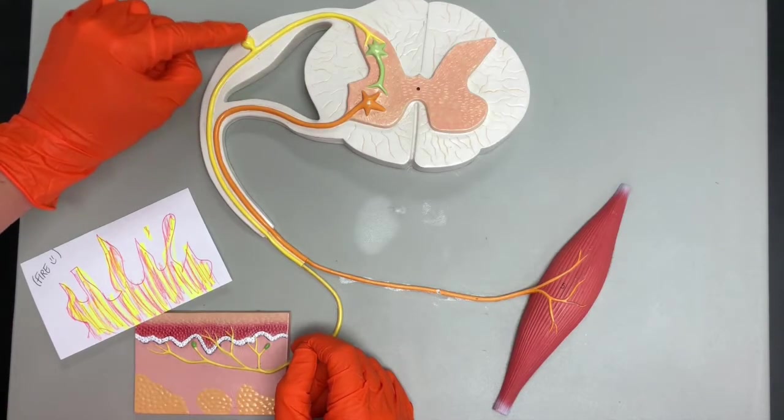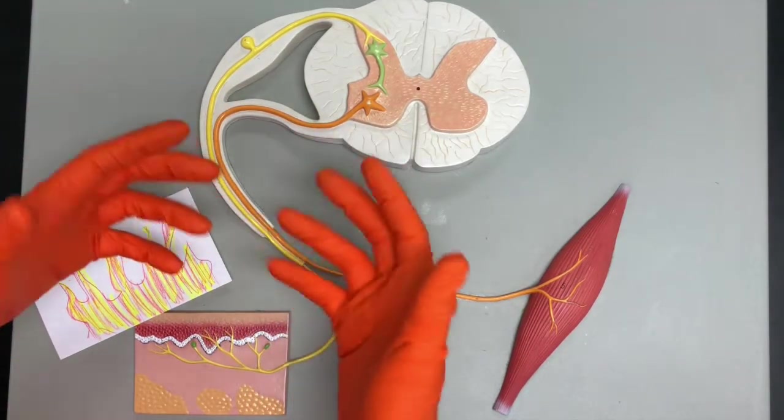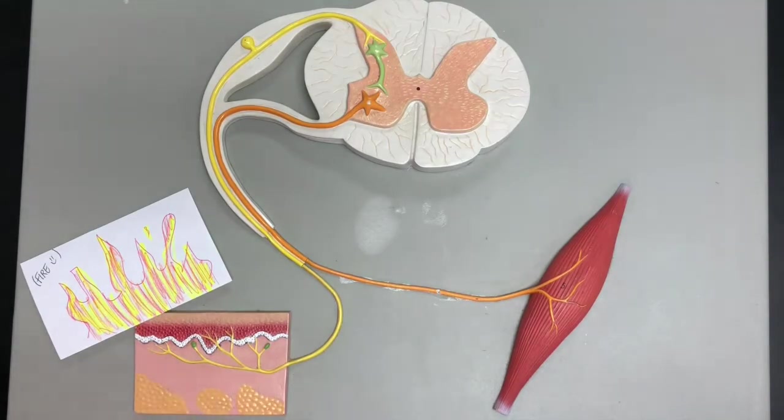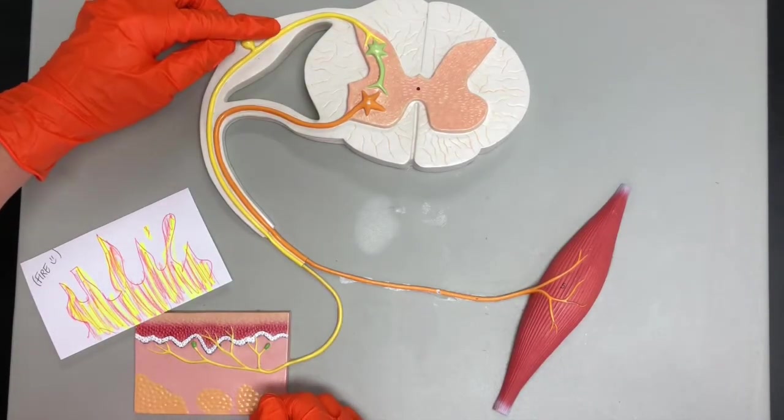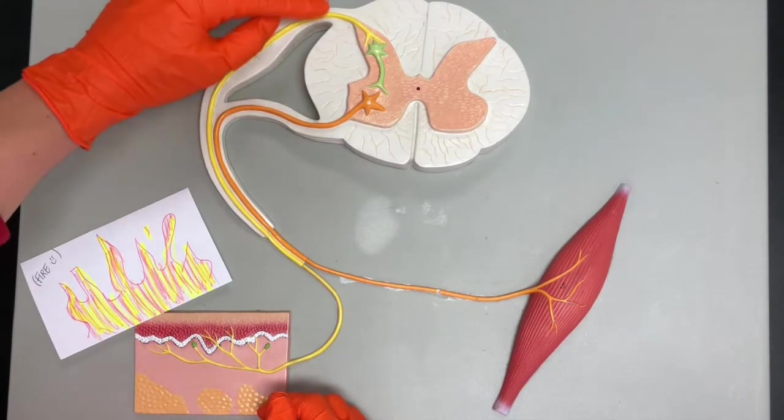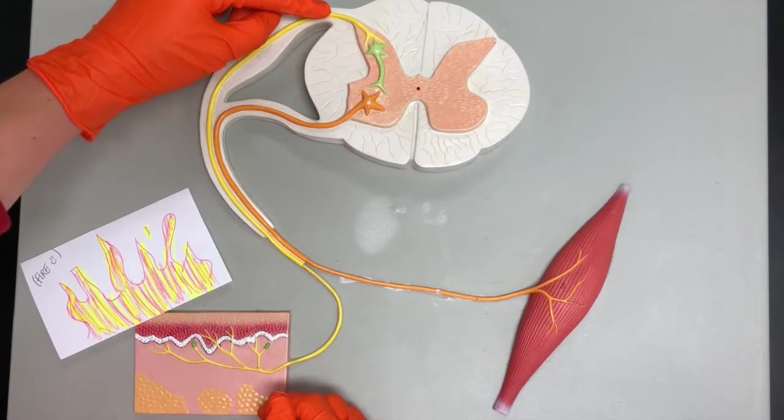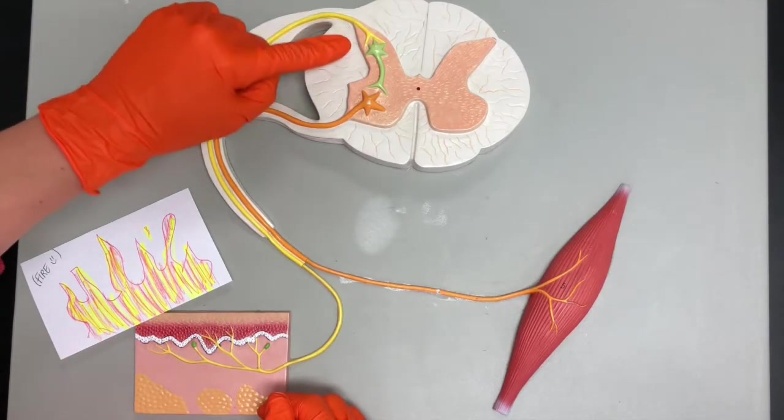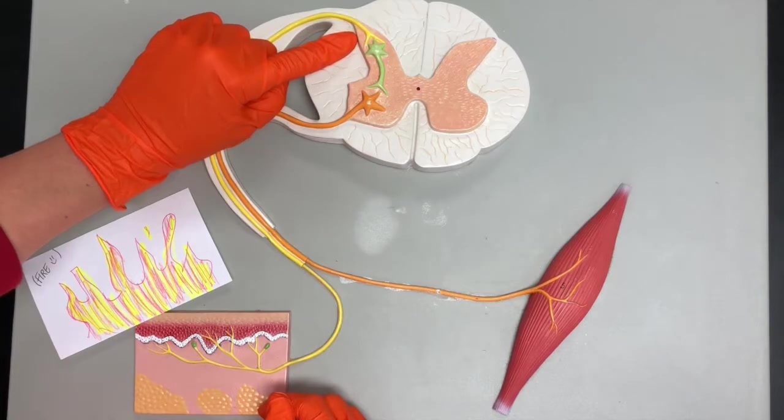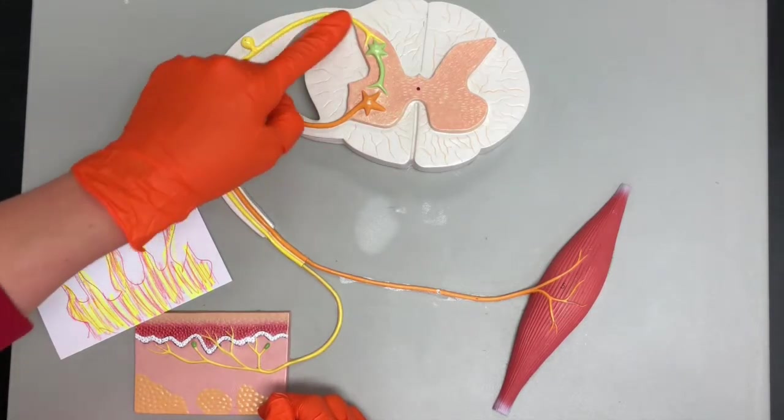The reason why we had that bulge is because it contains the cell bodies of all the unipolar neurons. So hopefully these things are starting to slowly but surely come together. We see here that it will continue to that posterior root and then connect to the posterior gray horn.